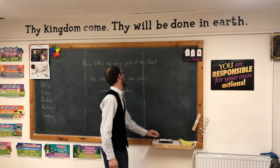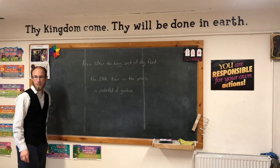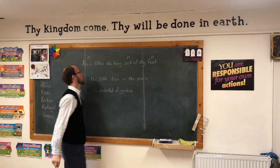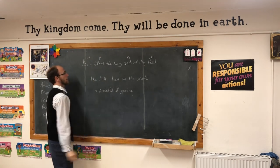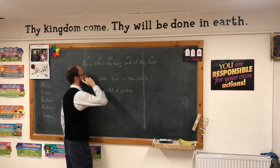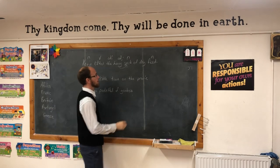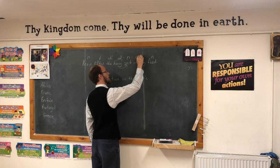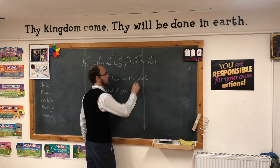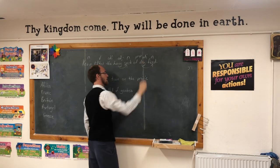Now let's look at this sentence: 'Kevin lifted the heavy sack of dry feet.' Let's label the parts of speech. Any nouns? Kevin, sack, feet. Perfect. Any verbs? Lifted. Good. What is 'heavy'? Adjective — because it's modifying 'sack,' which is a noun. And 'of' — preposition. And 'dry'? What word is it modifying? Words that modify nouns are adjectives. Great. Adjectives modify the nouns.